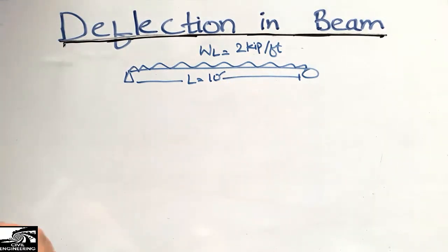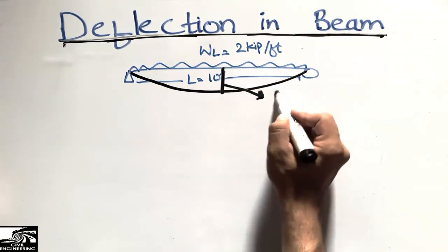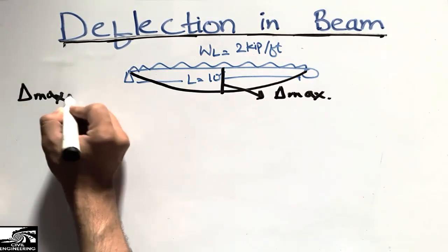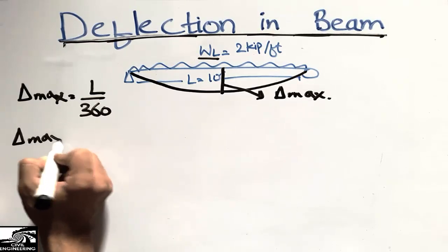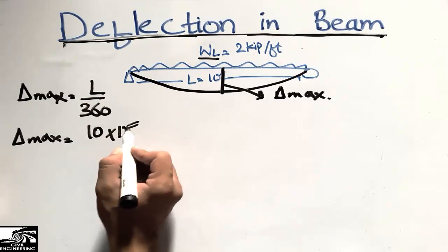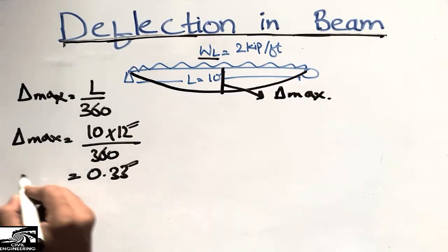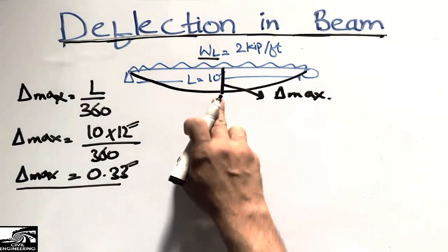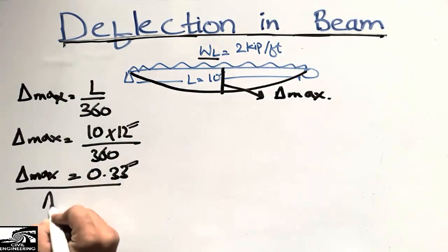We are going to find the maximum deflection and compare it to the allowable limit. The beam will bend with maximum deflection delta at the center. The maximum allowable deflection due to live load is L/360: L is 10 feet, converted to inches gives 120 inches, so 120/360 = 0.333 inches. Our deflection must be less than this value as per ACI recommendation.